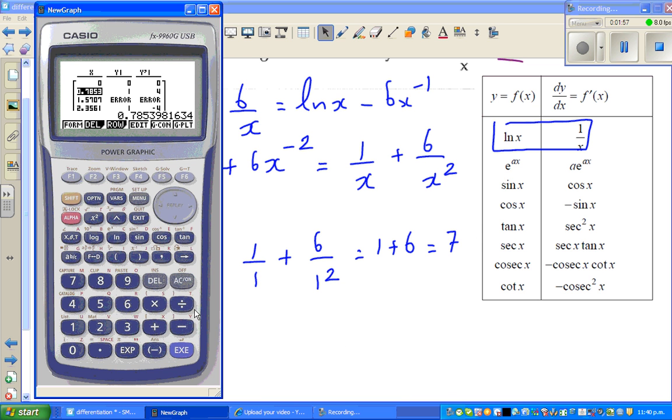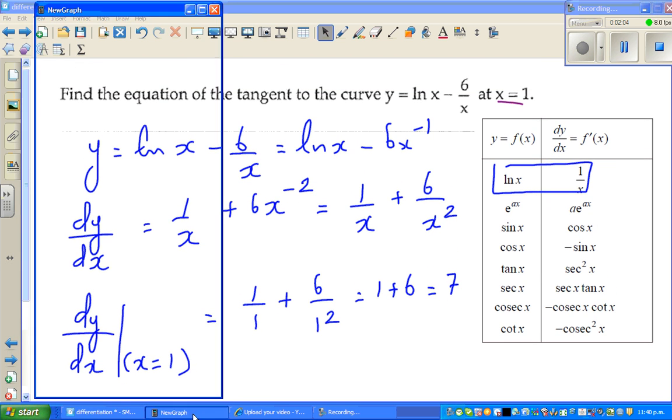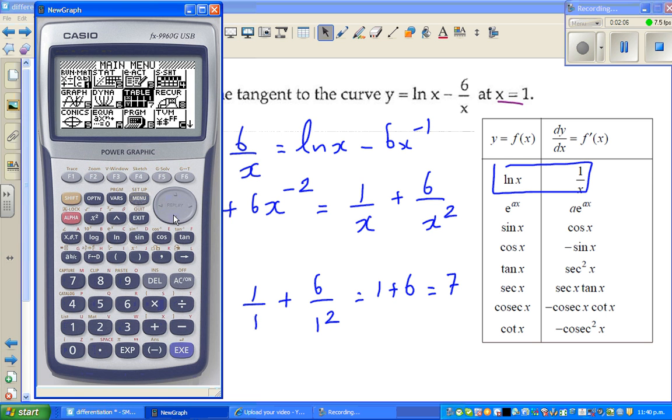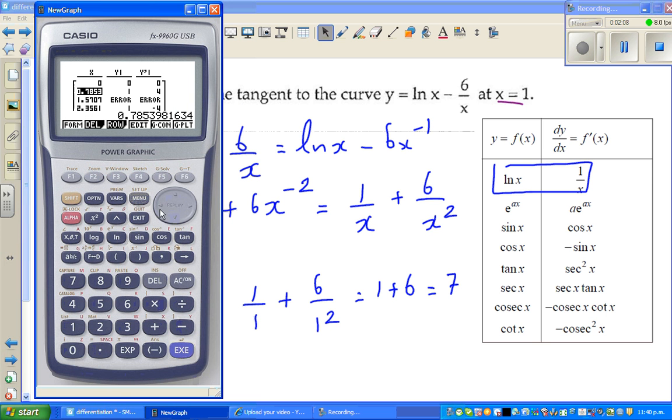So let us check this on the calculator. So the function is natural log of x minus 6 over x. Go to table menu, exit, and this was from the previous example. So you type in natural log of x minus 6 divided by x.